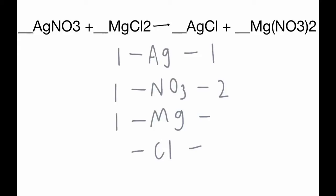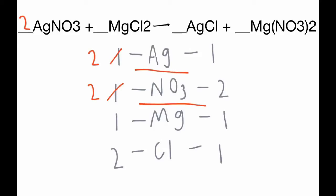On the left side we have 2 Cl and on the right side we have 1. We're going to balance NO₃ first, so we add a 2 on the left side. That also applies to the Ag, so now Ag has 2. We add a 2 in front of AgNO₃ to balance it. The 2 also applies to the Cl, so now Cl has 2, and Mg is already balanced — we have another completed balanced equation.